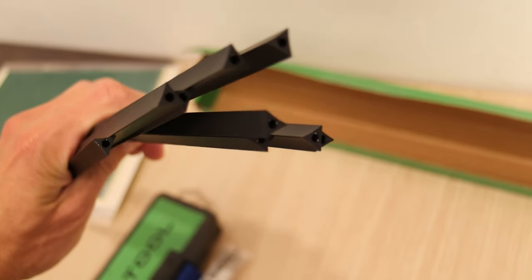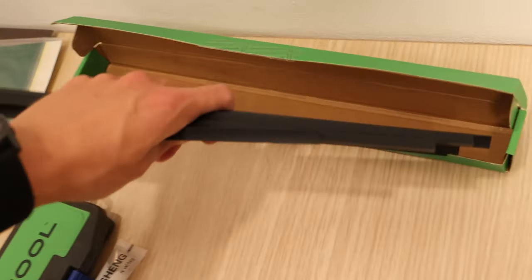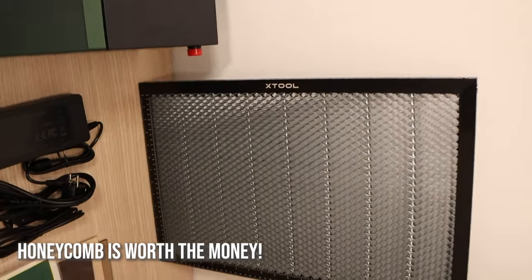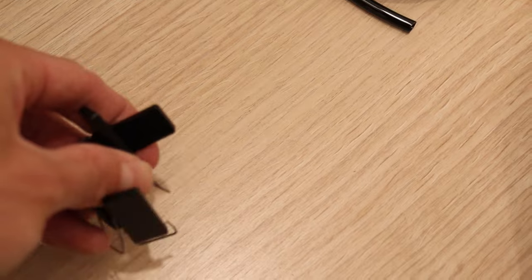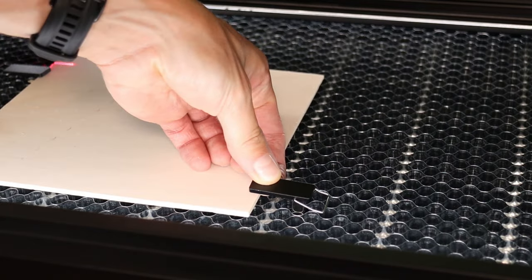This laser engraving machine comes with these triangular slates, which you can use to put under the material instead of the honeycomb, but I opted to get the standard honeycomb. Honeycomb comes with these cool magnetic hold-down pins, which are very easy to use for holding down the material.